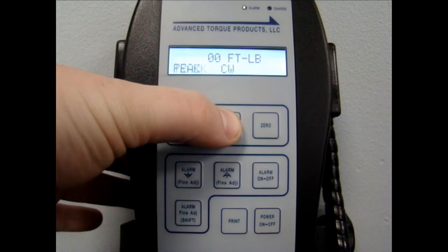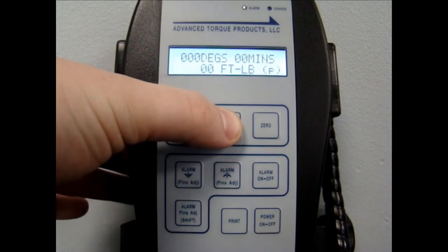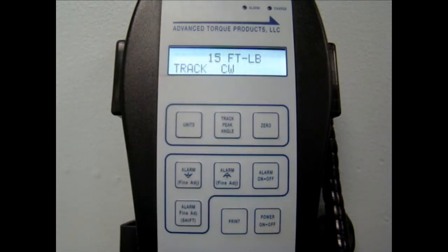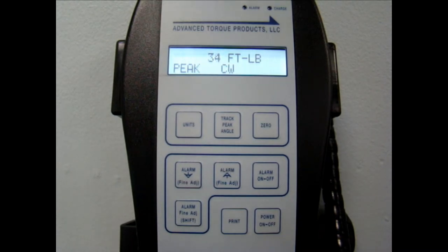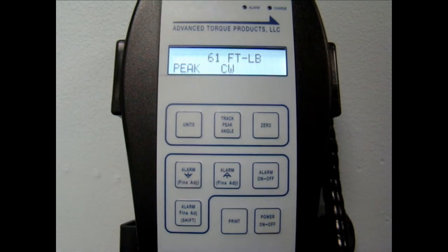The track peak angle button allows you to toggle through the different modes of measurement. Track mode displays the real-time torque and is best used for validating calibration and releasing force. Peak mode captures the highest torque achieved. The value will remain displayed until either a higher torque is reached or the display is reset by pressing the zero button.